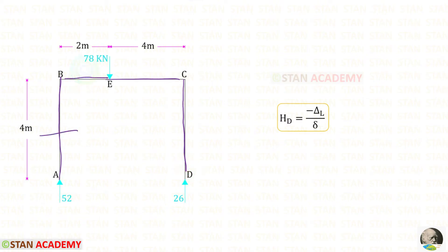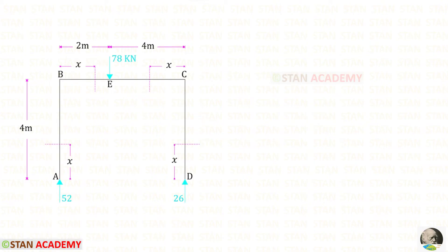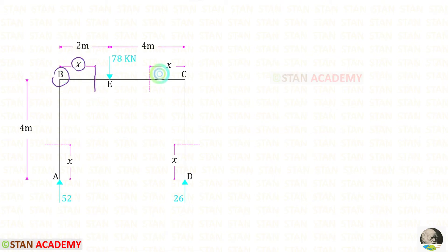One section in AB, one in BE, one in EC, and one in CED. You can see that I have made 4 sections. This section is at a distance of X from A, this section at a distance of X from B, this section at a distance of X from C, and this section at a distance of X from D.